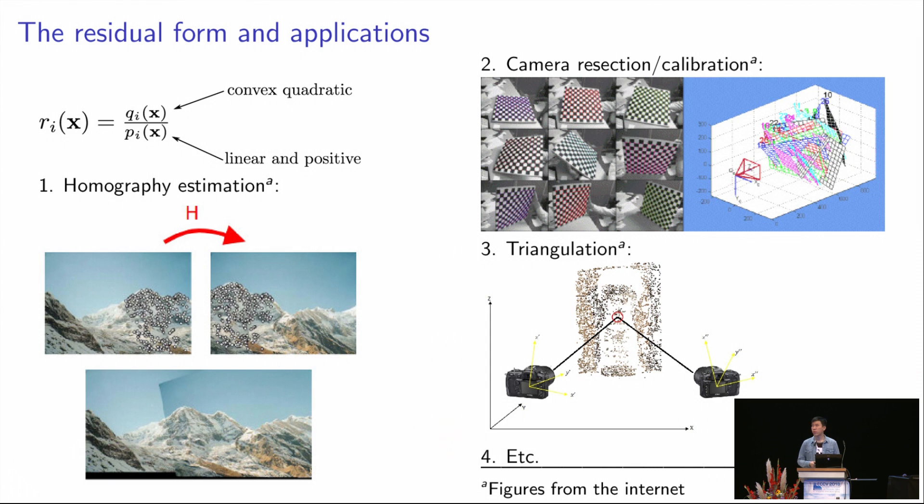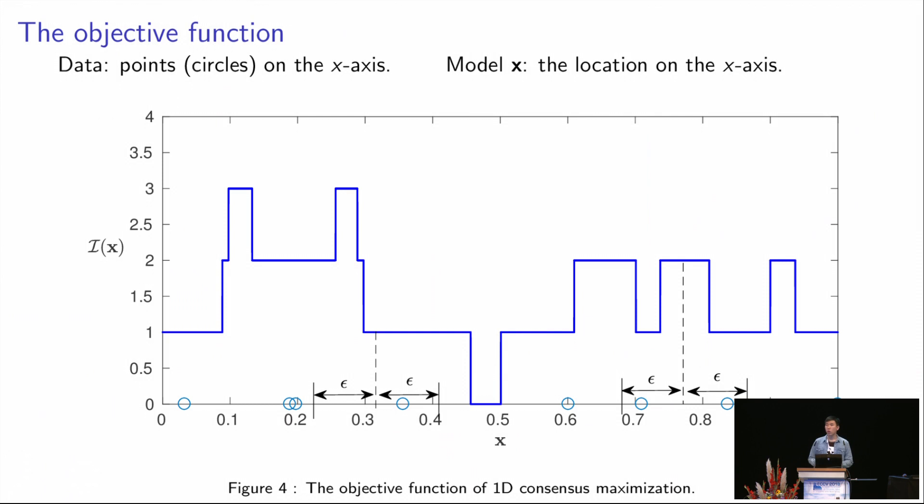Although the definition of the consensus maximization problem is clear and easy, solving this problem is actually pretty hard. This figure is the objective function of a 1D consensus maximization problem, where the input data are those small circles. We want to find the location on this x-axis that is within the epsilon distance to most number of these points. As we can see, since at each location the number of small circles that are within the epsilon distance can only be integer values, the objective function looks like a step function.